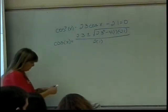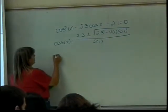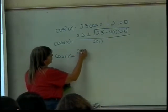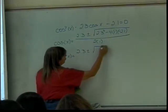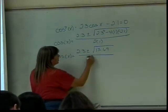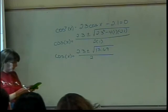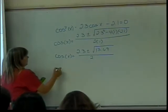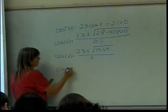Okay, 2.3 squared. So I end up with cosine of x equals 2.3 plus or minus the square root of 13.69 divided by 2. How nice, which turns out to be a nice square root actually.